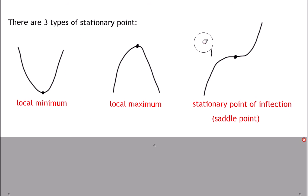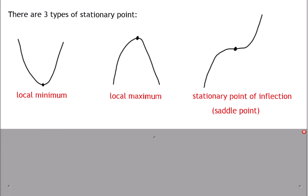The reason for that name — if I keep drawing, look, there's the saddle on the horse. So a saddle point or a stationary point of inflection. You don't need to know too much about those for additional maths, but you will at A level.